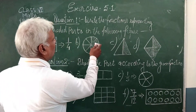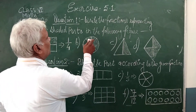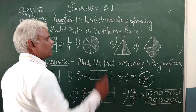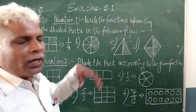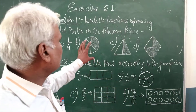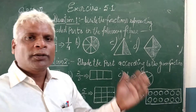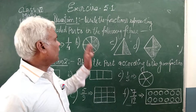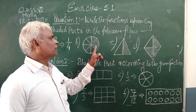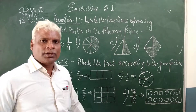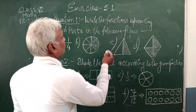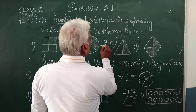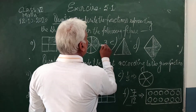Now the second one: 1, 2, 3, 4, 5, 6, 7, 8 — it is divided into 8 equal parts. And out of the 8, 3 parts are shaded. Therefore its fraction is 3 upon 8.